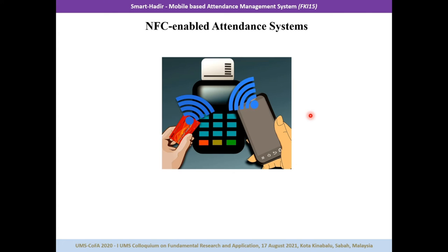The next technology is NFC technology. It is a type of low-cost sensor technology with short-range communication between compatible devices. The process requires at least one transmitting device and another to receive the signal. NFC standards can be used by a variety of devices, which can be passive or active. Similar to barcode and RFID systems, it requires a specific identity card and reader, though currently smartphones also have NFC features available for student attendance systems.